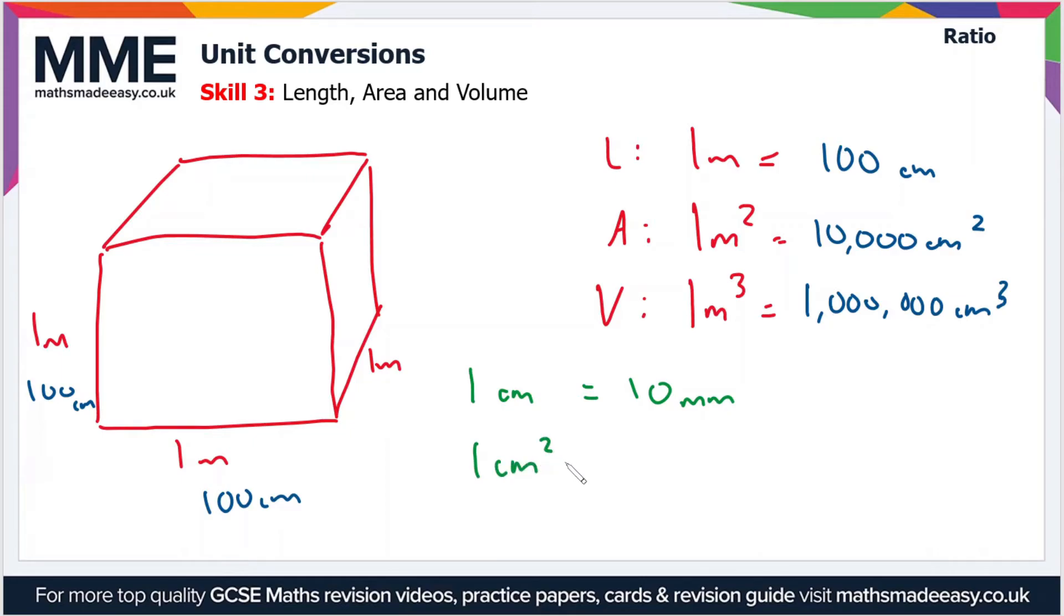Well that's 10 millimeters times 10 millimeters, which is 100 millimeters squared. And then one centimeter cubed will be 10 times 10 times 10, which is a thousand millimeters cubed.